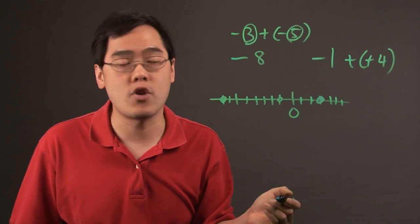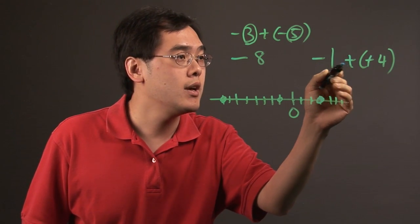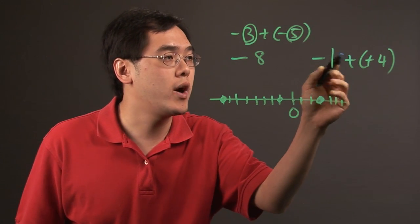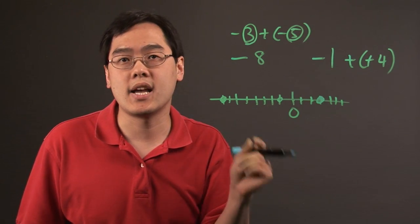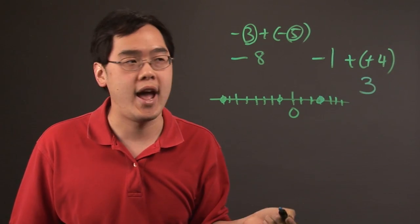So in this case, you do have to subtract. So negative 1 plus 4 is like you're taking 1 away from 4. And when you subtract negative numbers, you want to take the sign of the larger number. So in this case, because the 4 is bigger, you're going to have a positive 3. And that's what you have.